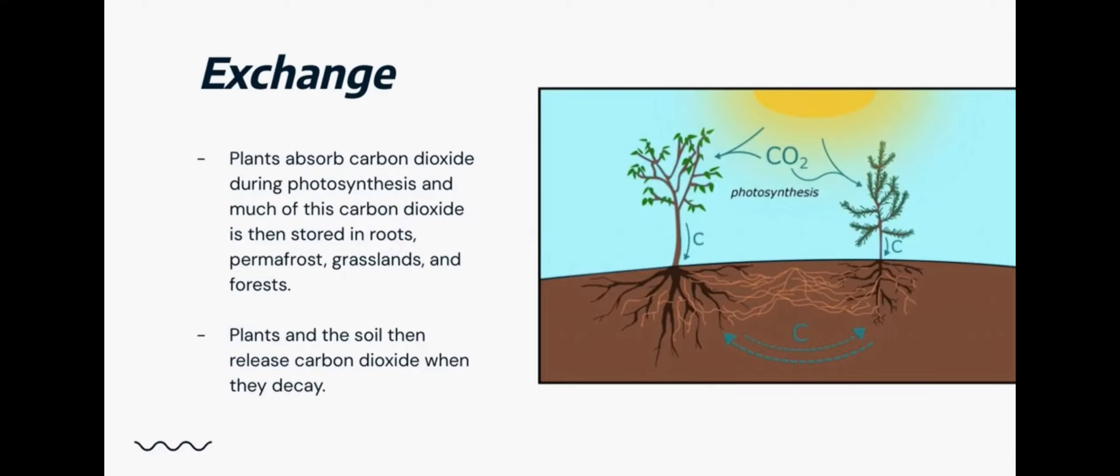Exchange is when humans or animals release carbon dioxide and plants absorb it, and it goes through the process of photosynthesis, where most of the carbon is used to turn to sugar, while the rest of it travels through the plant roots into the soil, where it can become part of the soil organic matter. This organic matter can then be broken down by microorganisms, releasing carbon back into the atmosphere as CO2, or it can be stored in the soil for long periods, contributing to soil fertility and structure.